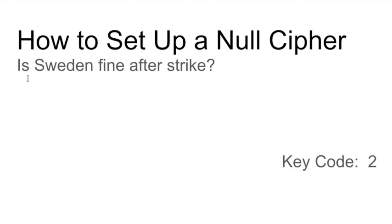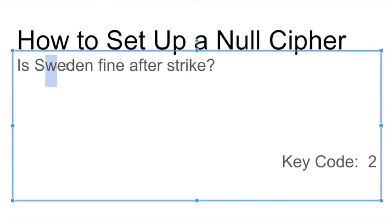With the key code of 2, we then know that the letters S, W, I, F, and T — when combined — form the word SWIFT. Guys, this is it.